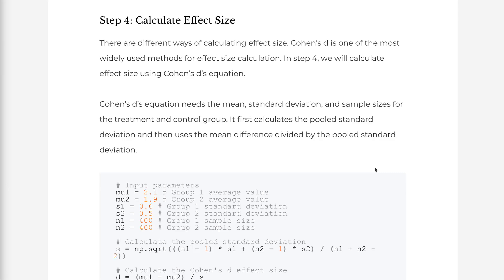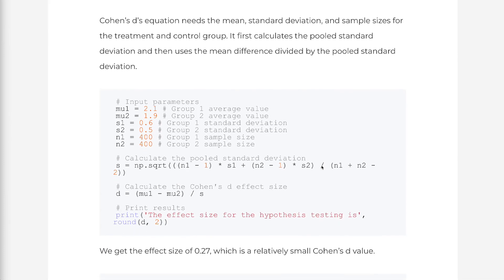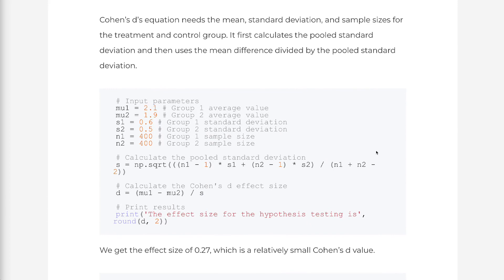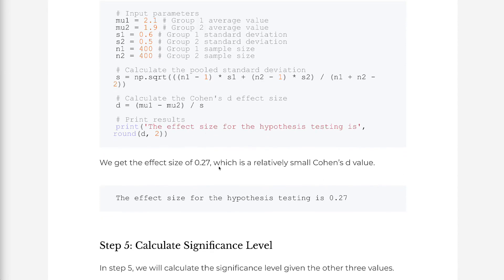There are different ways of calculating effect size. Cohen's D is one of the most widely used methods. In step 4, we will calculate effect size using Cohen's D's equation. Cohen's D needs the mean, standard deviation, and sample sizes for the treatment and control group. It first calculates the pooled standard deviation, then uses the mean difference divided by the pooled standard deviation. We get the effect size of 0.27, which is a relatively small Cohen's D value.